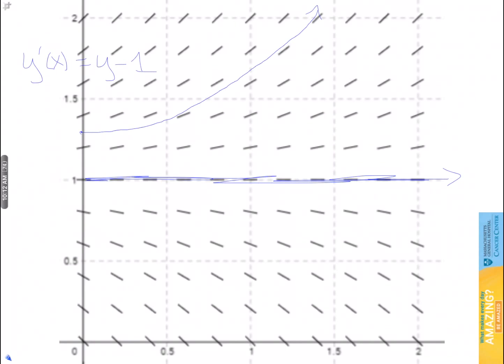If we start below 1, we can see that we will follow the slope of these lines down. So this is kind of the idea of a direction field.